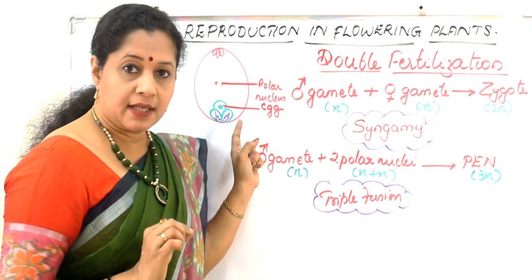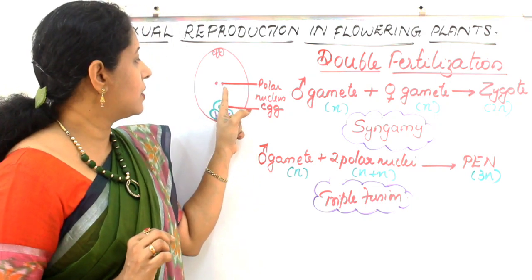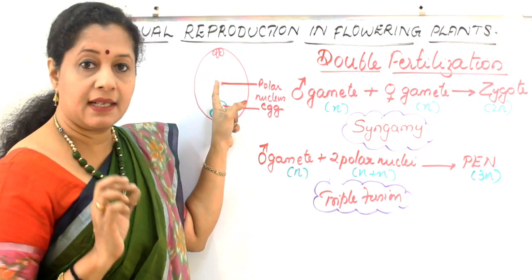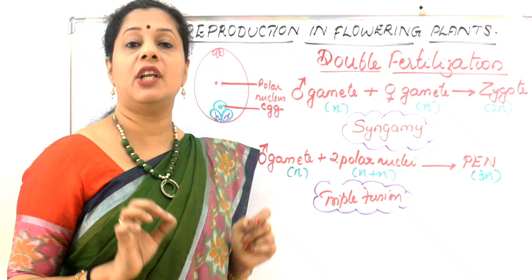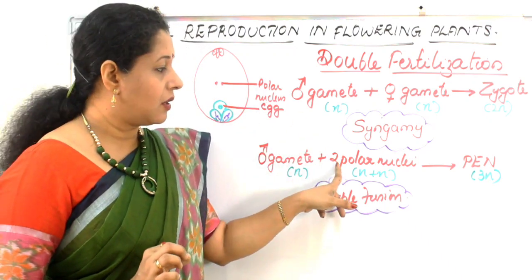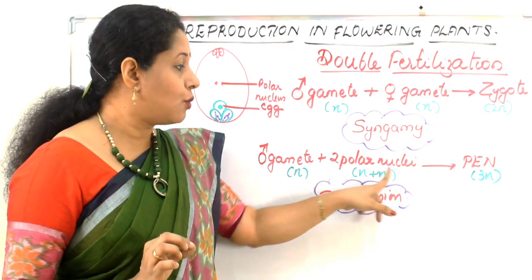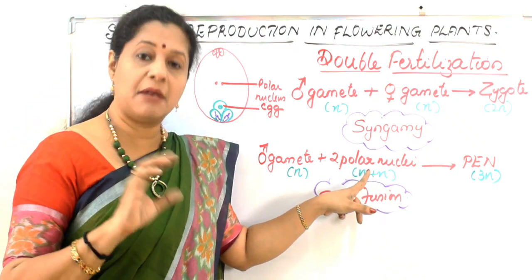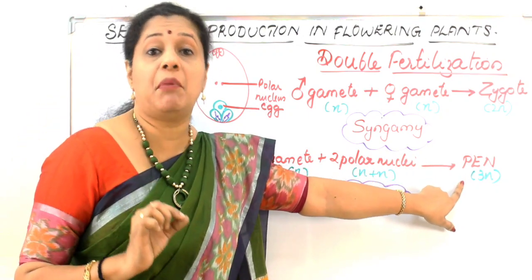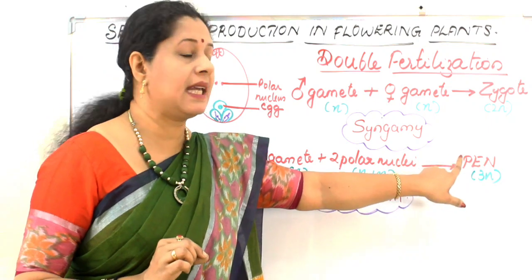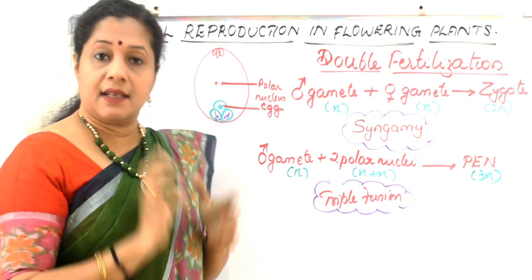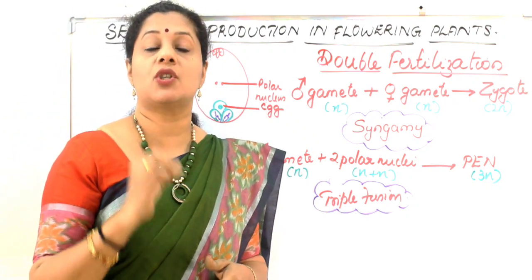The second male nucleus goes and fuses with the two polar nuclei in the central cell of the embryo sac. Two polar nuclei, or secondary nuclei, are present there. The male gamete (haploid, N) fuses with two polar nuclei (N + N, diploid together), forming a triploid structure called the primary endosperm nucleus (PEN). This nucleus results from the fusion of three nuclei.